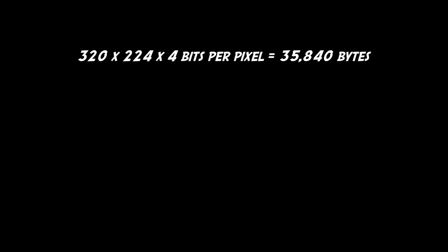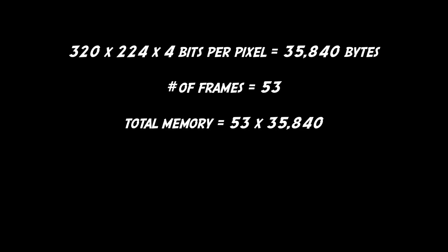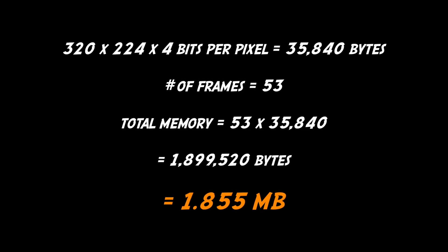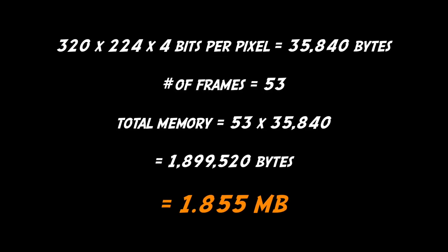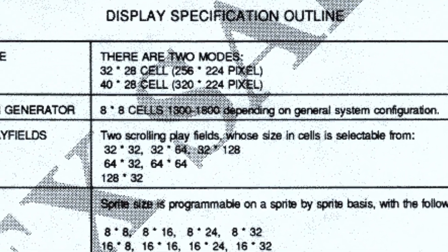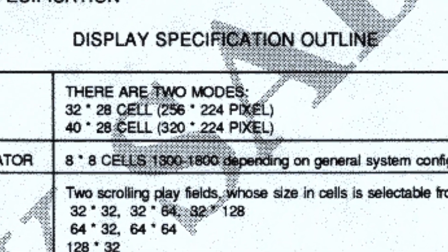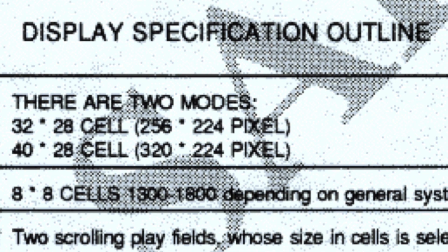Now, with a screen resolution of 320x224, 53 frames would take nearly 2MB, which is twice the size of the Sonic 2 cartridge, so clearly some tricks were needed. First, they used a special lower resolution mode for this section, running at a screen resolution of 256x224.